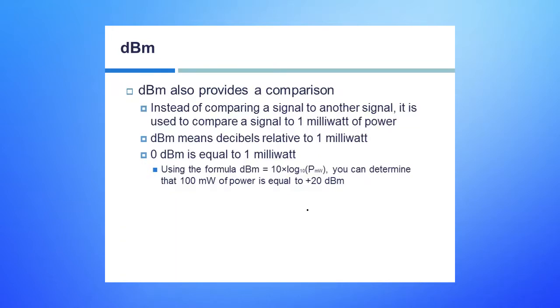DBM is a comparison to milliwatts. Instead of comparing one signal to another, it's used to compare a signal to what we call one milliwatt of power.